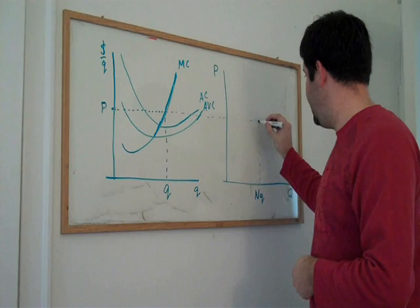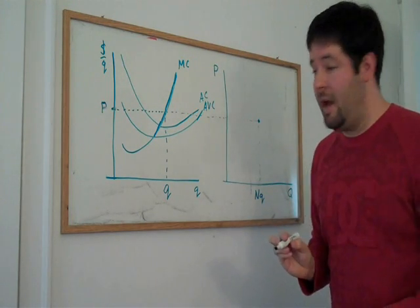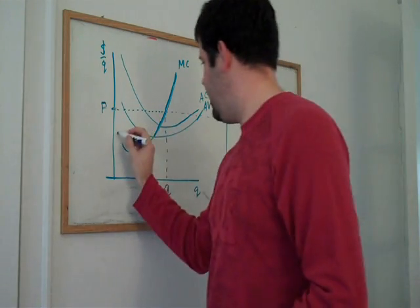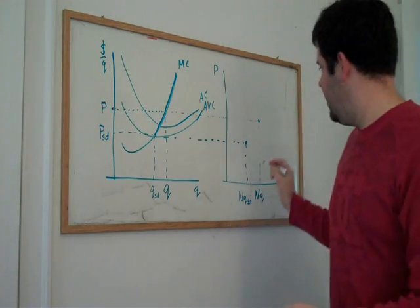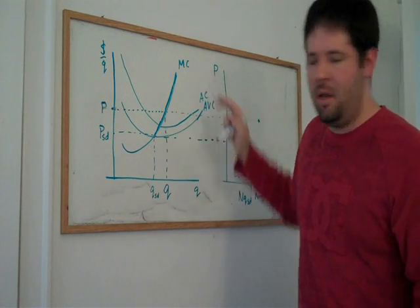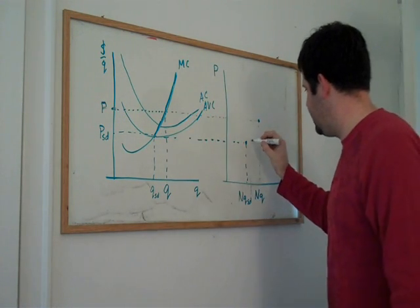So given that price, there's a point on the industry supply curve. Now, we can do this for each and every price that we have here, and we get to trace out a locus of points. What you'll see is that because this is upward sloping, the industry supply curve is also upward sloping.